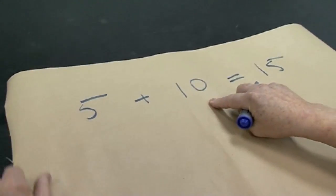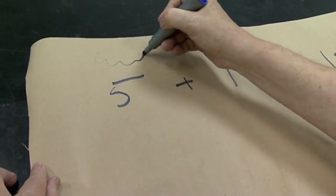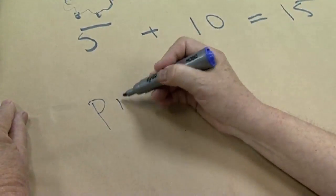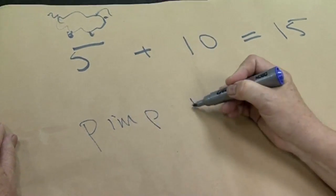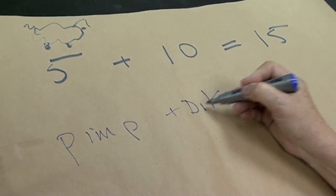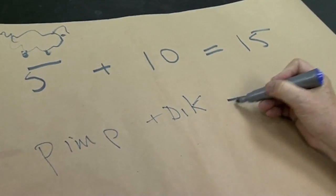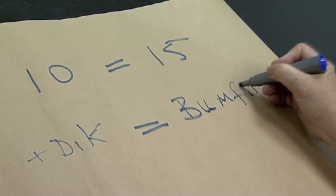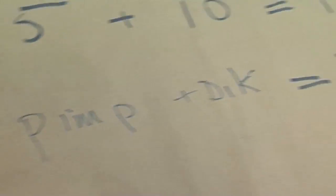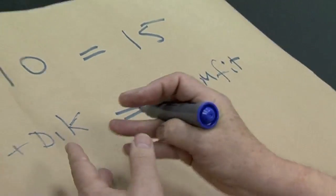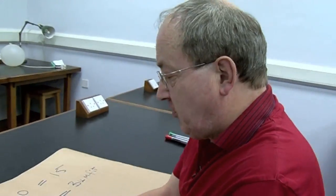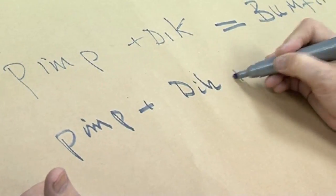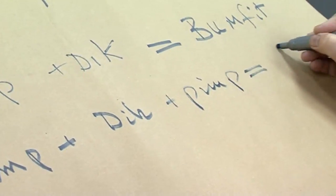So this is five sheep plus ten sheep equals 15. There's a little woolly thing with a head out here and a tail coming along. This is a pimp plus a dick — dick, I can't even say it right — dick, is equal to a bumfit. In some parts of the country that has two T's, but that's not really relevant at all.